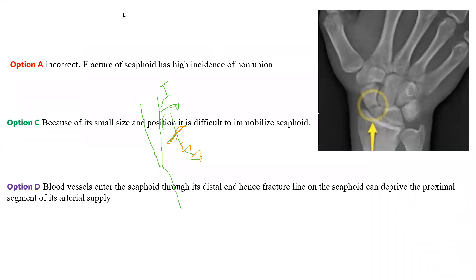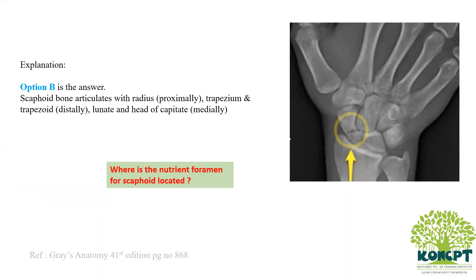Coming to the discussion of the options: Option A is incorrect because fracture of the scaphoid bone has a high incidence of non-union. Option C is incorrect — since the scaphoid bone is small in size, it is difficult to immobilize. Option D is incorrect — we have seen that blood vessels enter through the distal end, so it is the proximal segment that undergoes avascular necrosis. Option B is the correct answer: the scaphoid bone articulates with five bones — radius, trapezium, trapezoid, capitate, and lunate.